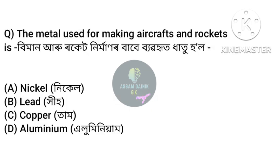The metal used for making aircraft and rockets is Option D: Aluminium.